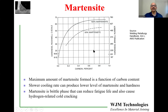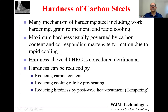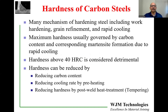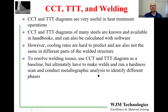Depending on the situation, corrective action may be needed. Options include selecting a lower carbon steel, reducing the cooling rate by preheating, or reducing weld hardness through post-weld heat treatment called tempering. That topic will be discussed in a later video in this playlist. In summary, CCT and TTT diagrams are very useful in heat treatment and are widely available in handbooks; they can also be calculated using software if not available.